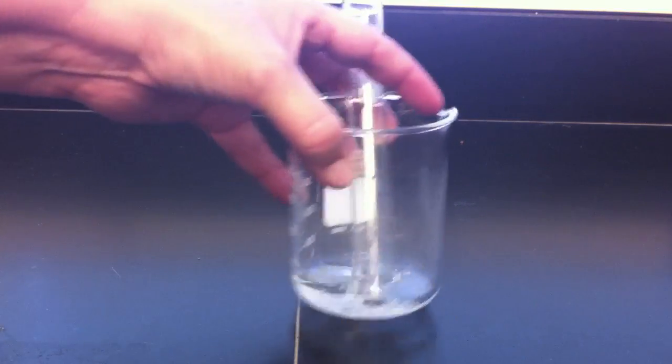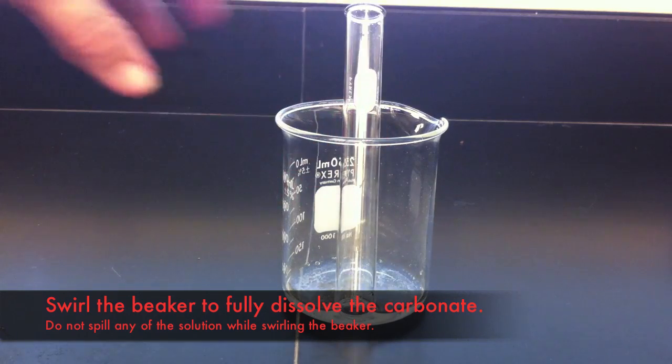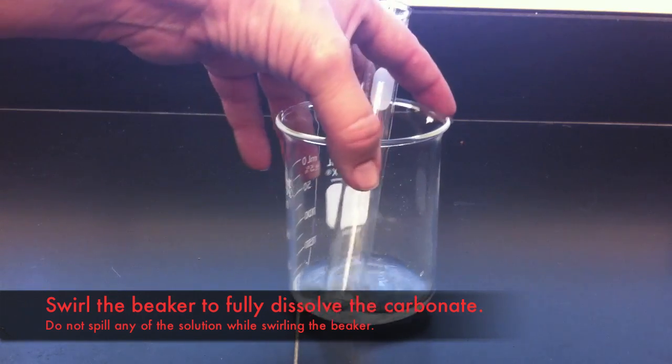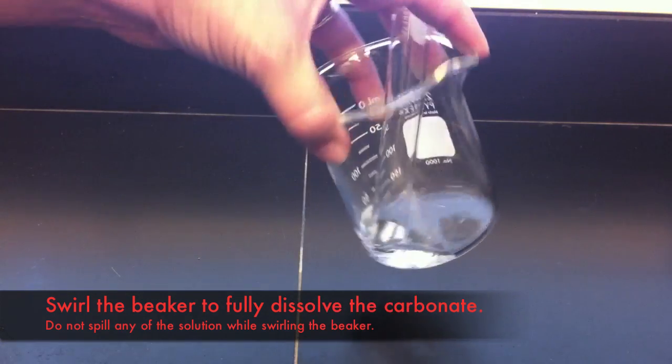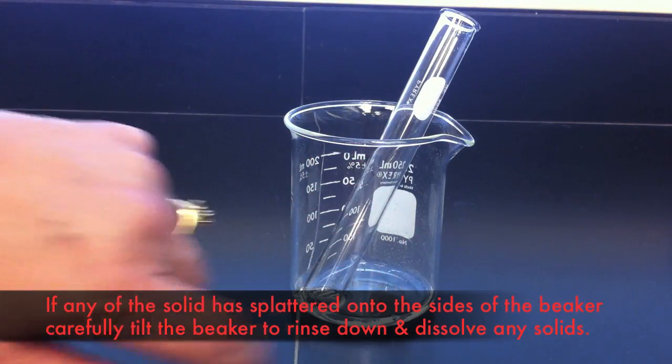Be sure that all the metal carbonate has reacted and that all the carbon dioxide has been driven out of the solution. Swirl the beaker gently. If you notice that there is any of the solid on the walls of the beaker, tilt it carefully and rinse down the solid. Make sure it gets dissolved by the acid.